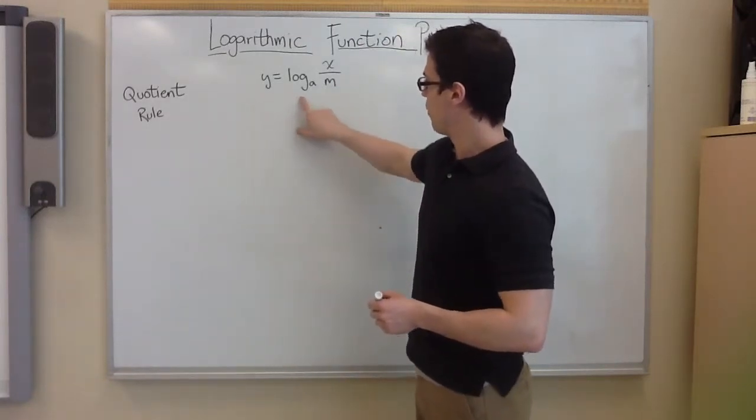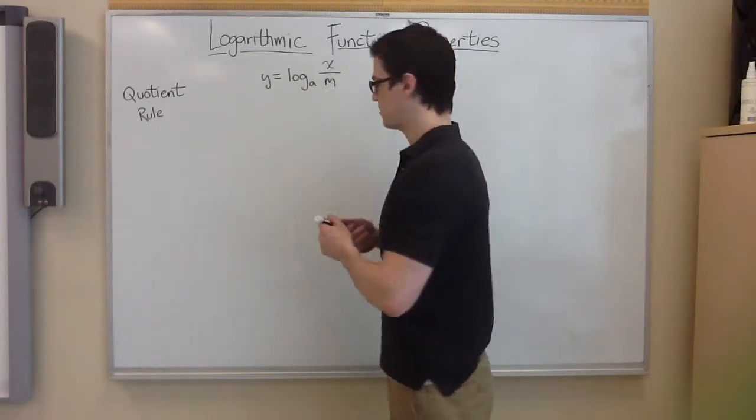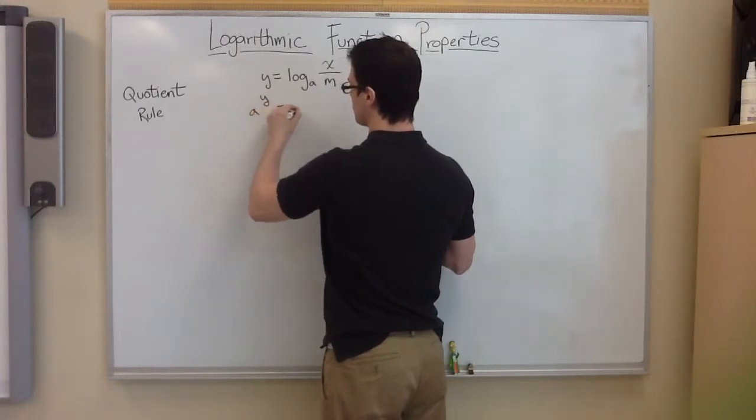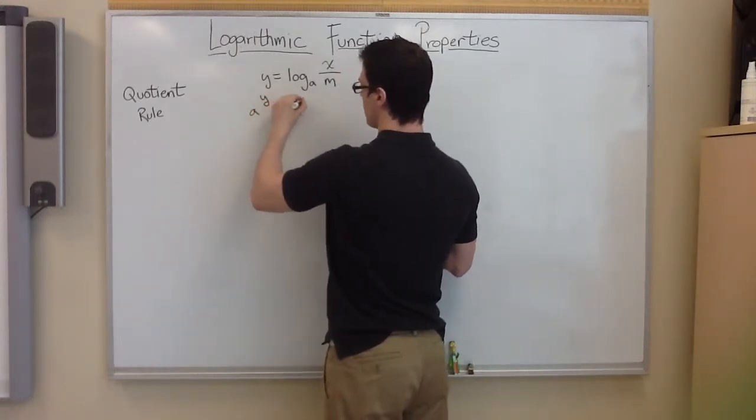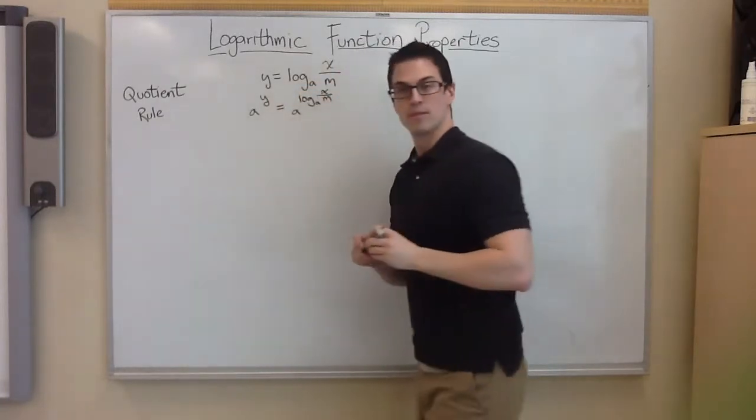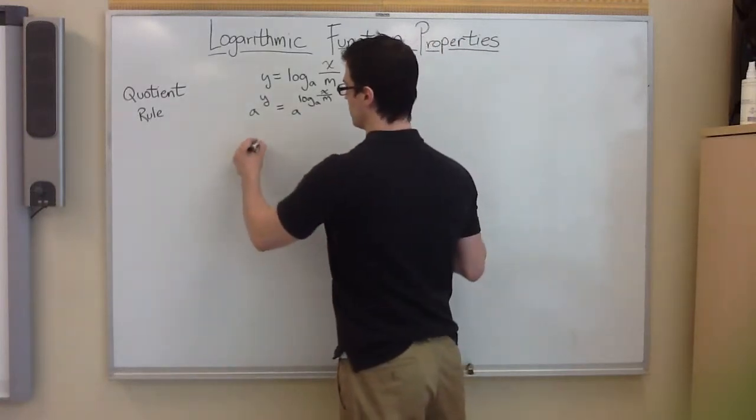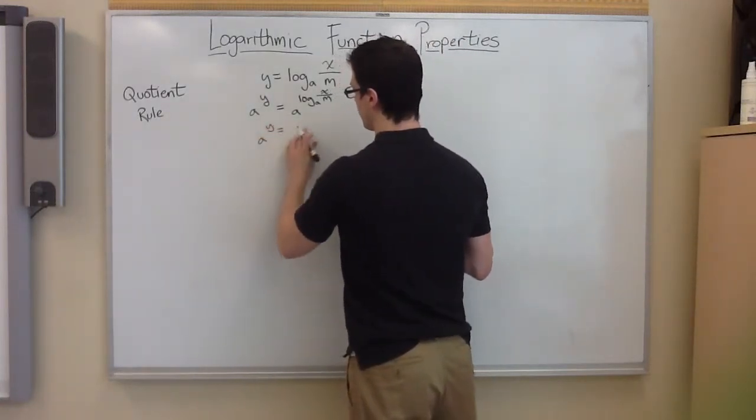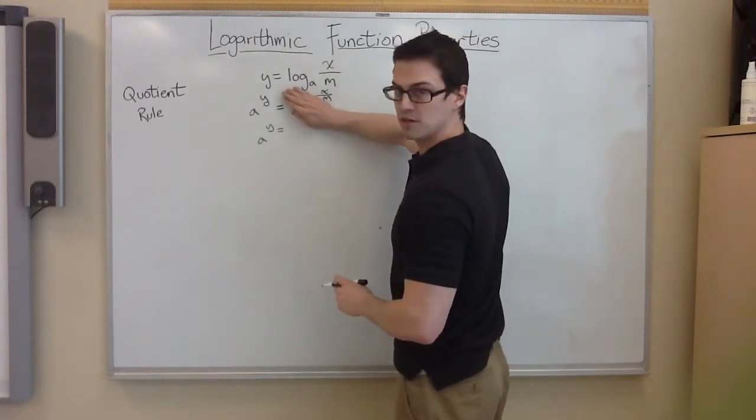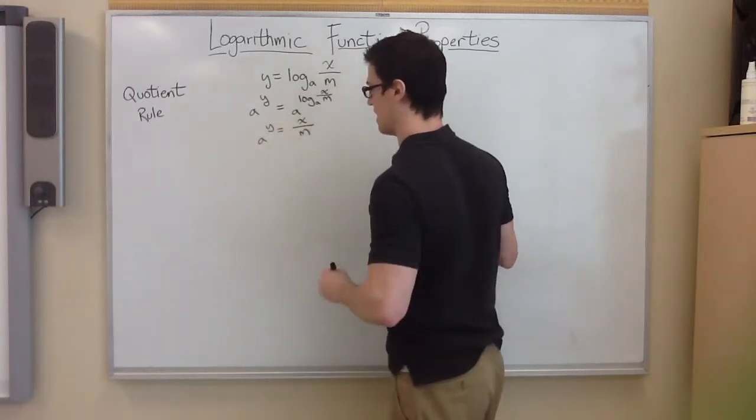First thing we're going to do is raise both of these. We're going to take a and raise them to whatever is on that side with a as the base. So we're going to do a to the y equals a to the log a of x over m. If you remember our basic logarithmic properties, you know that this base a right here and this log base a is going to cancel. And you're going to get left with x over m.